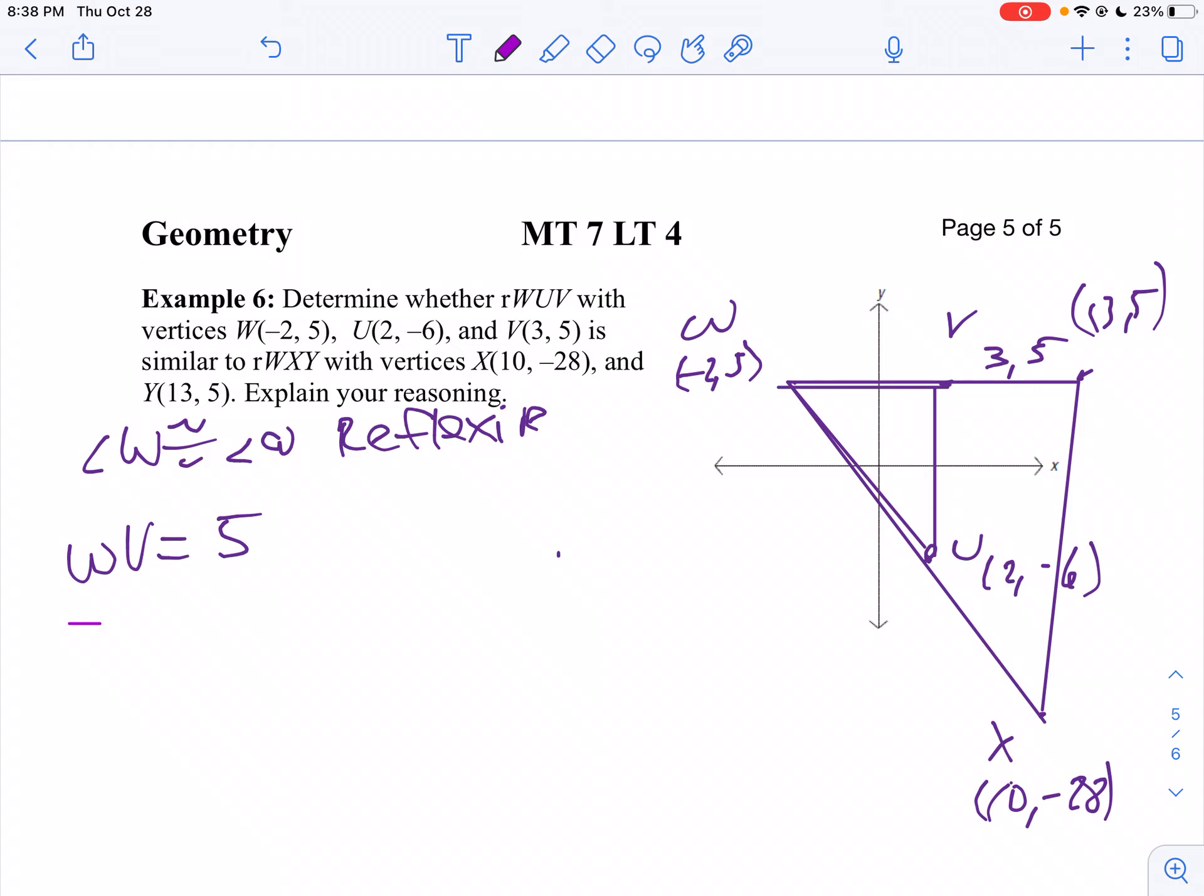My distance from W to Y. Well, I'm going from negative 2 to positive 13. So that would be 15. So my ratio is 5 to 15, which would be 1 third.